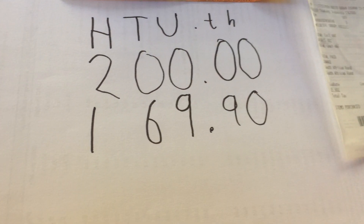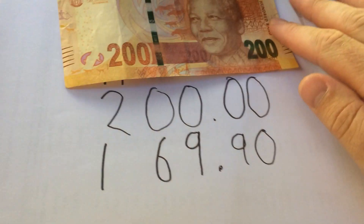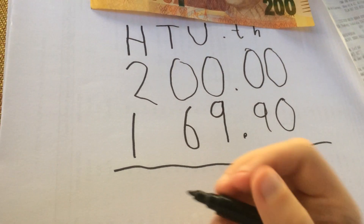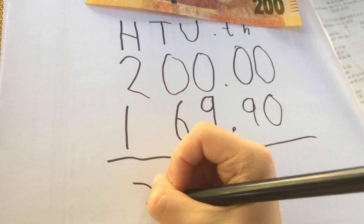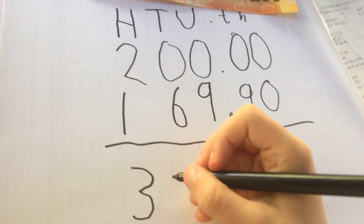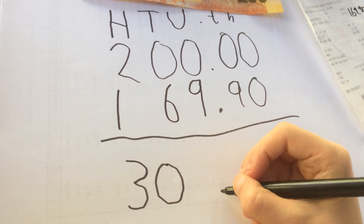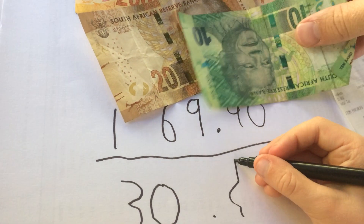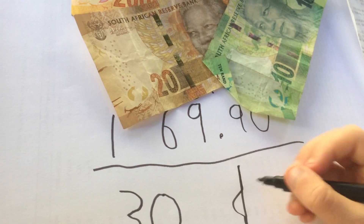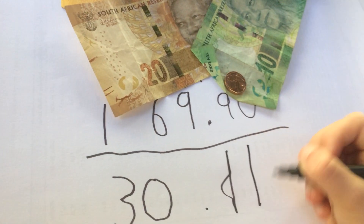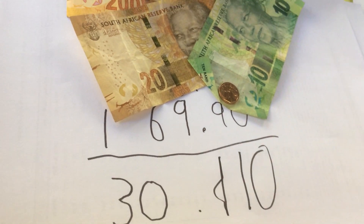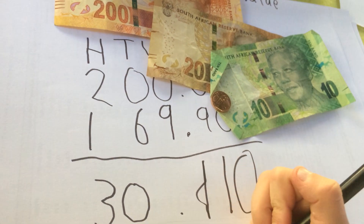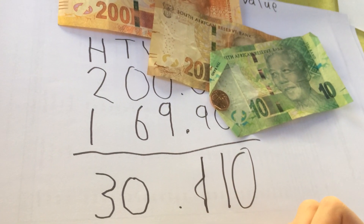So let's see how much change we get from the 200 Rand note. We don't have any hundreds left over, but we get 30 Rand and 10 cents. Fantastic. That's an example of buying using South African currency with the prices and using that in place value.